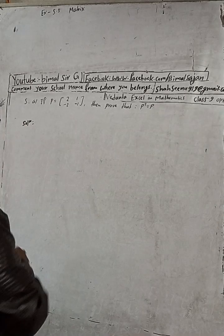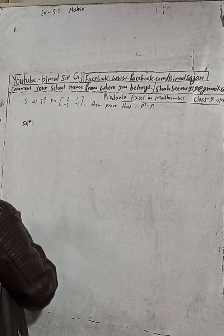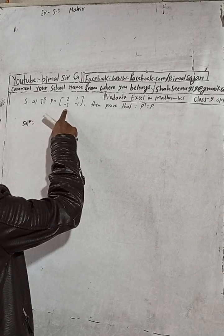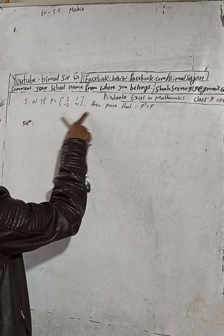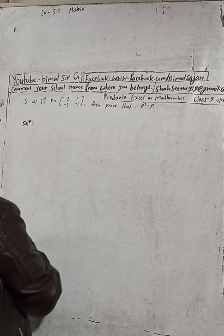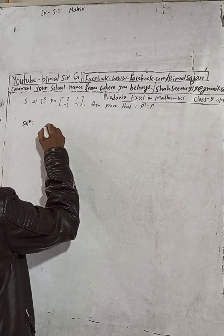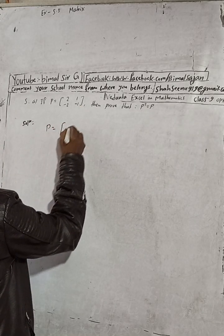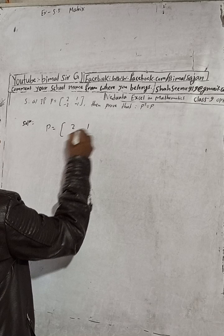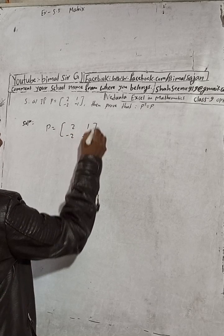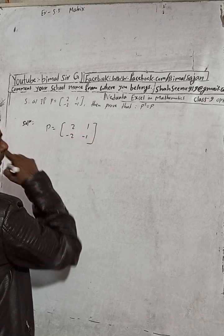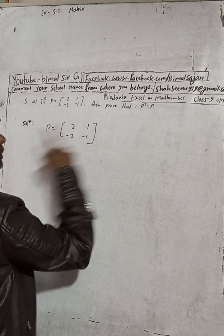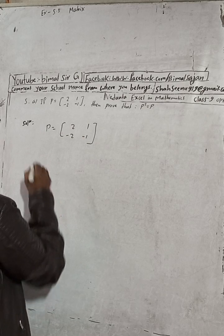Here is the 5A solution. If P is equal to — this is the matrix — then prove that P square is equal to P. So what is given here: the P matrix where P is equal to [[2, 1], [-2, -1]]. This is given and we have to prove that P square equals P.